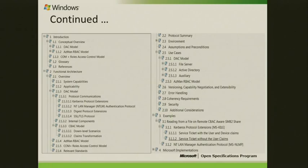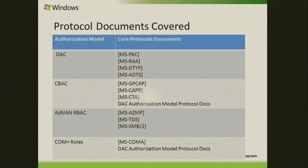For example, where you have a Windows 7 client and a Windows 8 file server you are trying to connect — the Windows 7 client doesn't have the capability for CBAC. And for NTLM: regardless of whether the client is Windows 8 or Windows 7, NTLM doesn't have the capability to carry the claims. When the request comes in, how does the file server fetch the claims on behalf of the user?